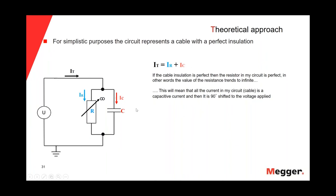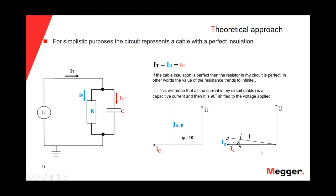If we do the phase diagram of this circuit, we will see that the voltage and the current are separated by an angle of 90 degrees, with the resistive current equal to zero. Now, if we don't have a perfect insulation, the value of the resistance no longer trends to infinite, and we will start to see some resistive current going through the resistor. In that case, the phase diagram changes, and we now have a small component of the resistive current.